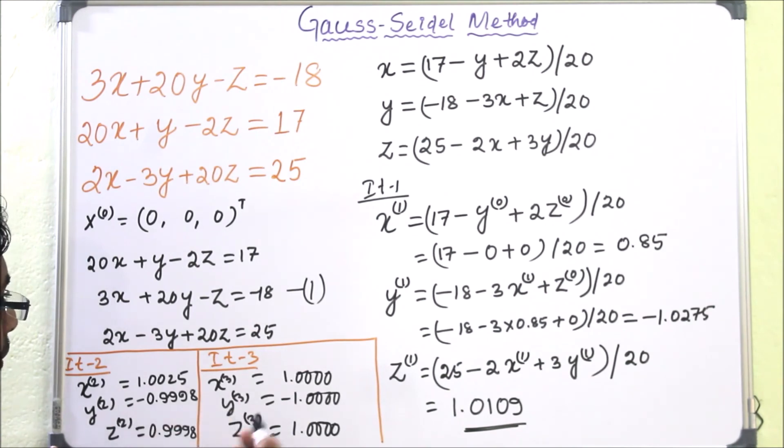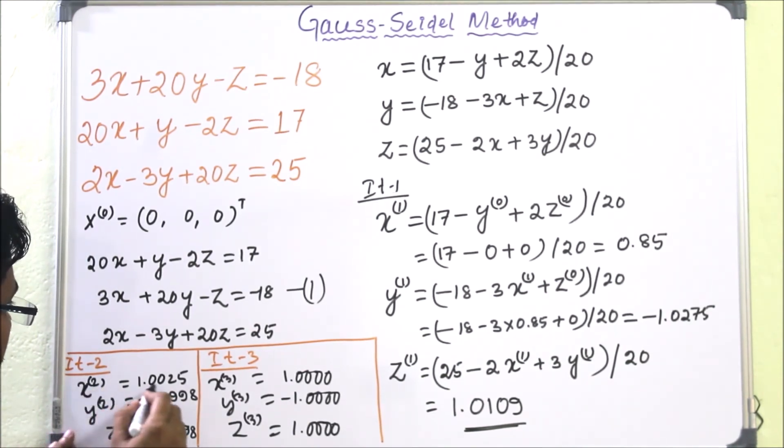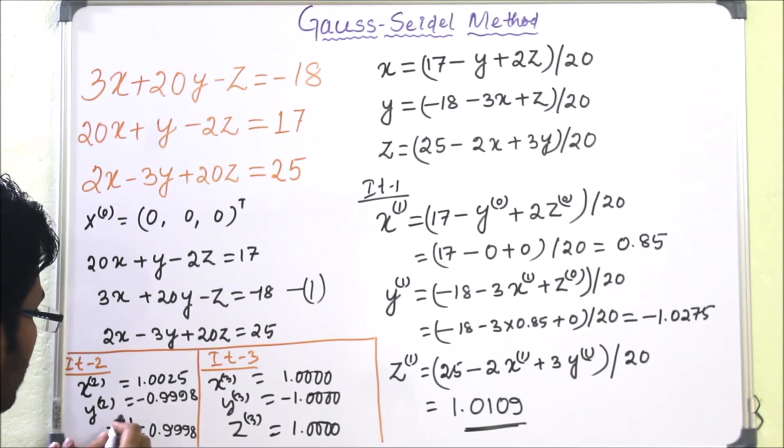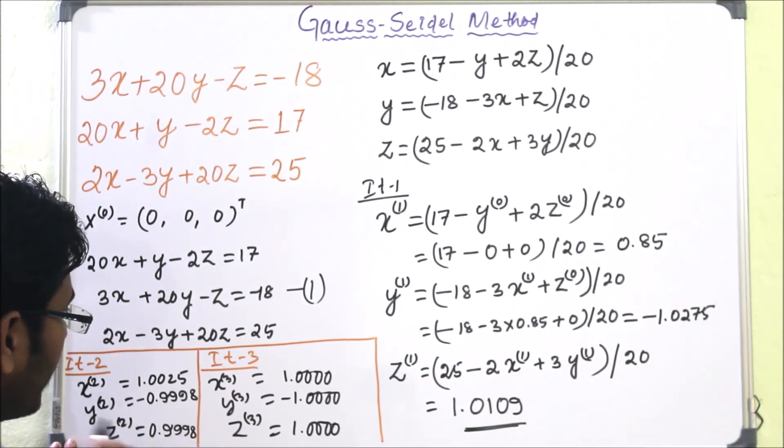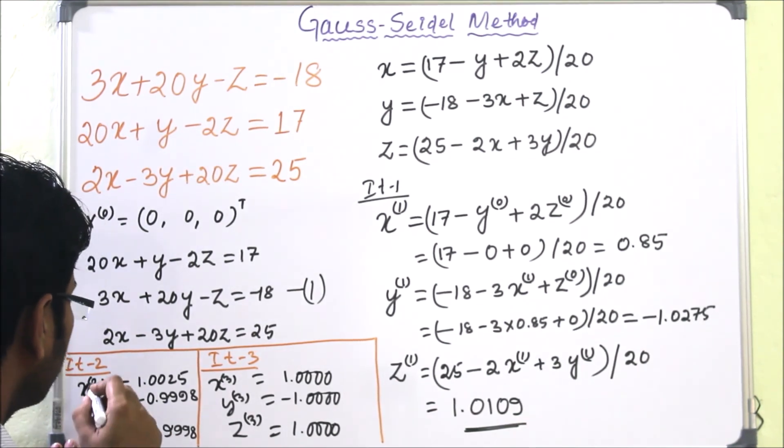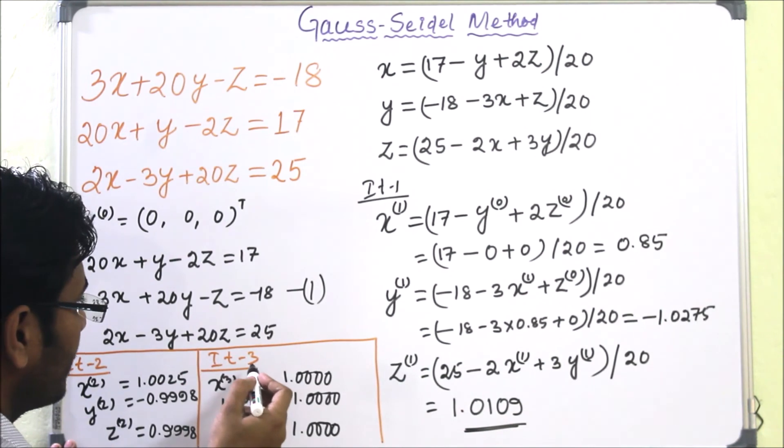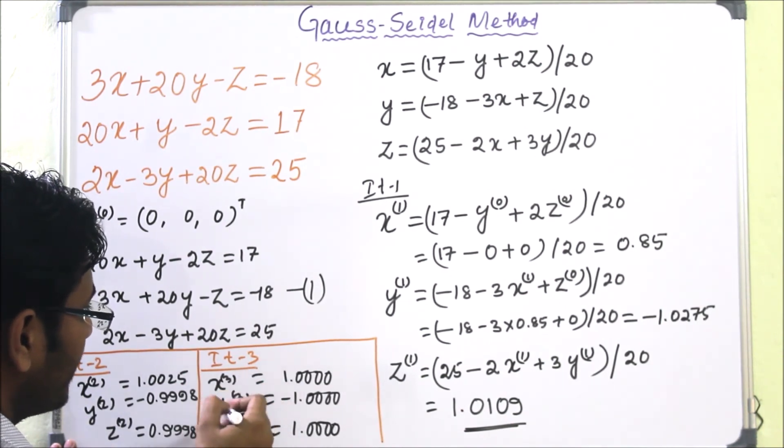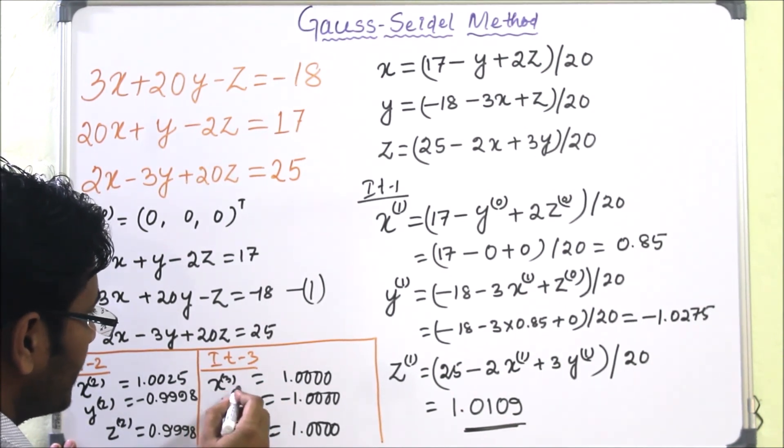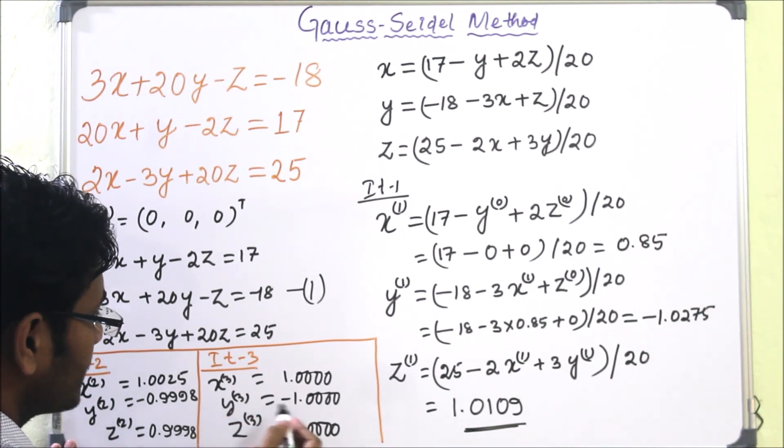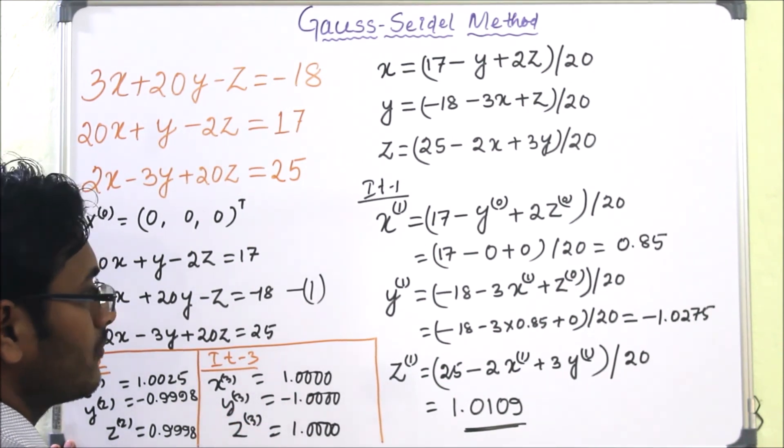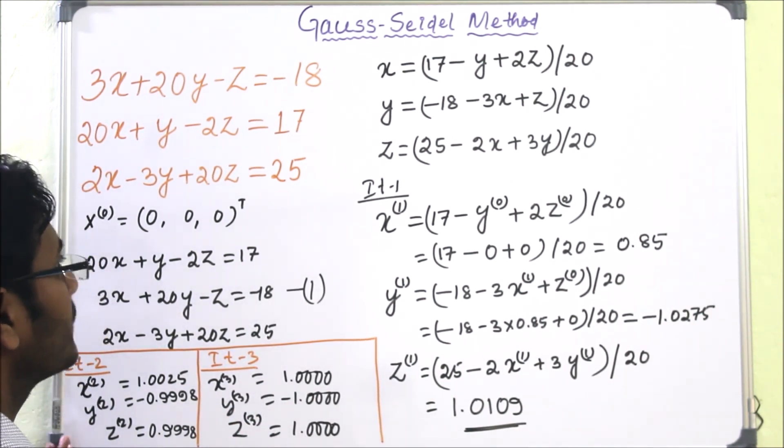So after three iterations we got these values: for second iteration X2 will be 1.0025, Y2 will be minus 0.9998, Z2 will be 0.9998. Similarly if we use this value, then we will get the third iteration values: X3 is 1, Y3 is minus 1, and Z3 is 1.0025. So this is the solution of this system using Gauss-Seidel method.